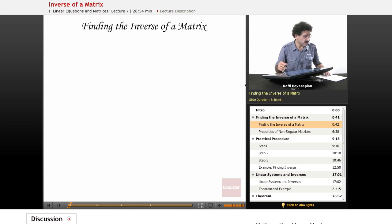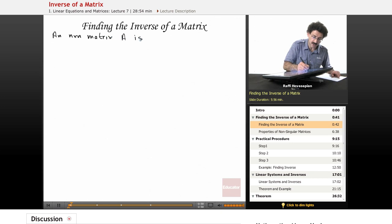So finding the inverse of a matrix, let's start off with a definition. An n by n matrix A is called nonsingular